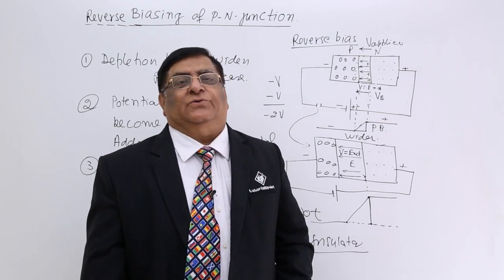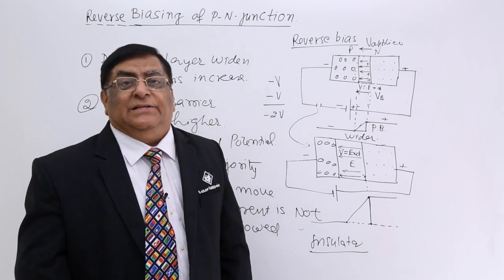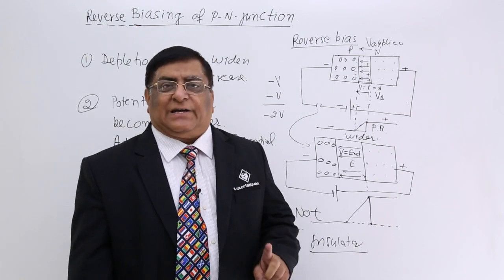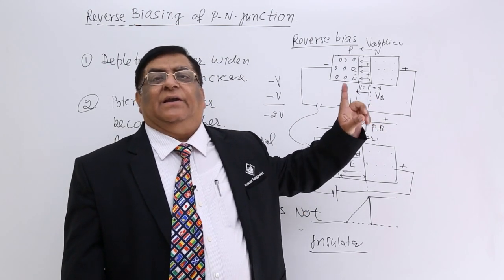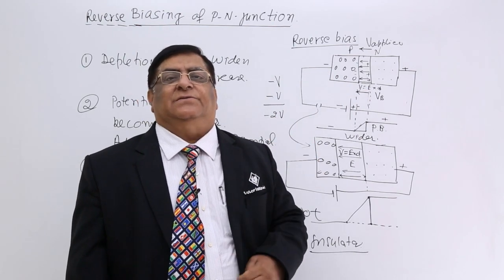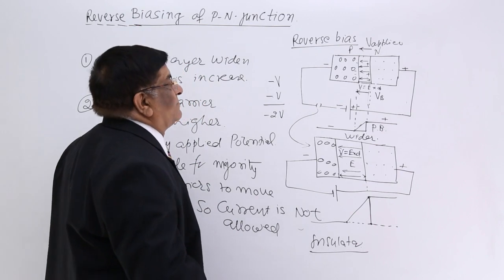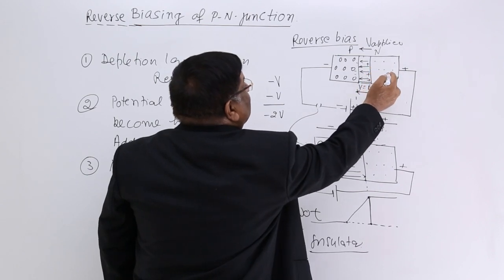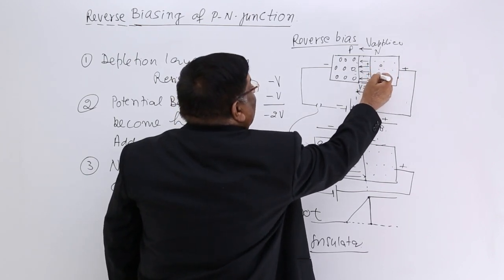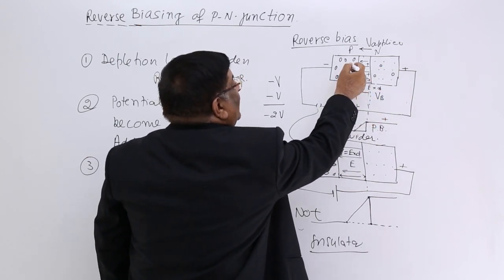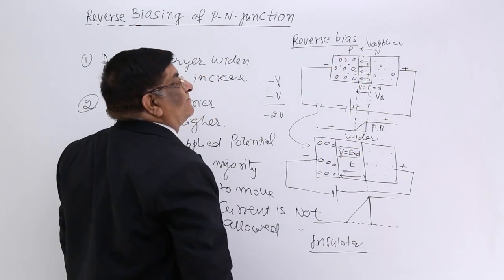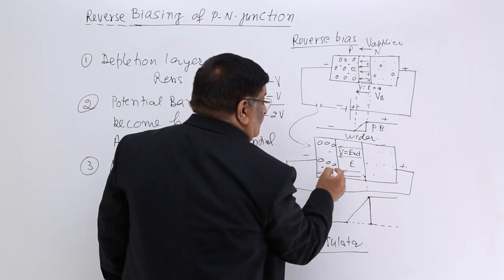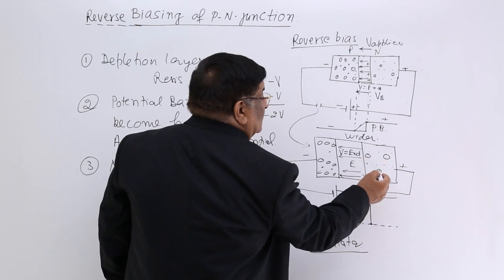There is another thing that is very important to understand — the phenomenon of reverse current. What is reverse current? Reverse current is a current flowing in this circuit in reverse biasing only, that is why it is known as reverse current. In reverse biasing, when we say this is an N-type semiconductor, the majority charge carriers are electrons, but there are certain minority charge carriers which are holes. In P-type, the minority charge carriers are electrons.